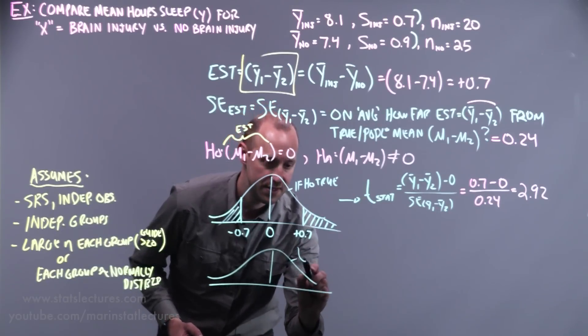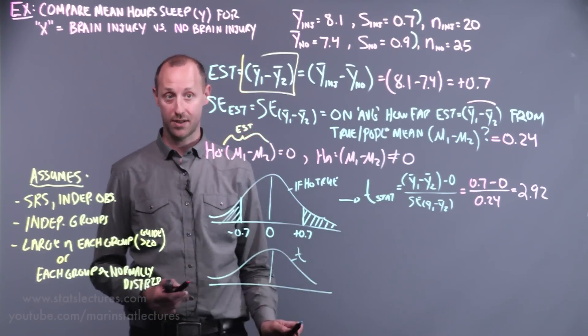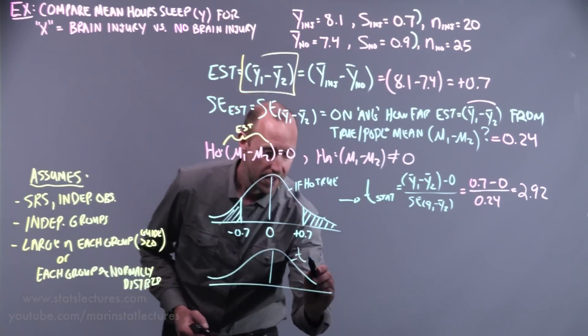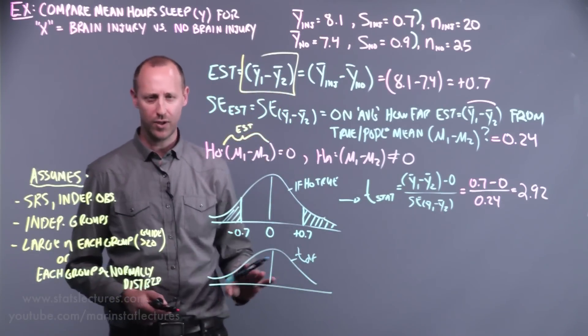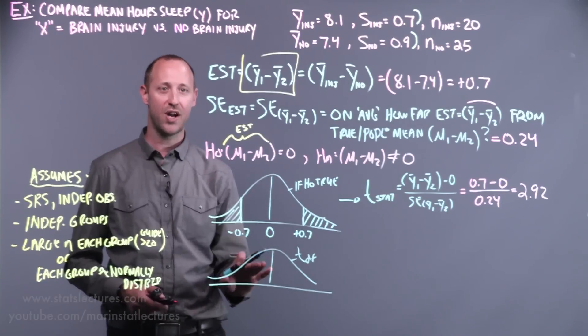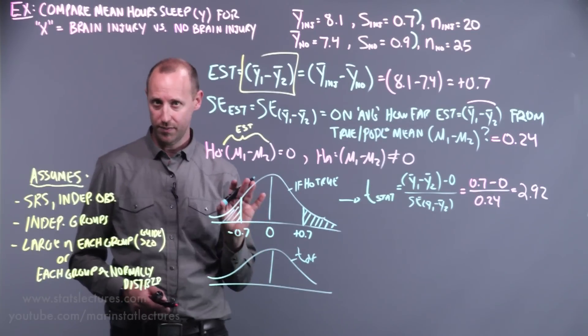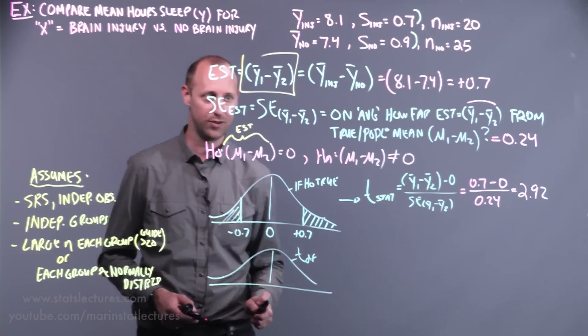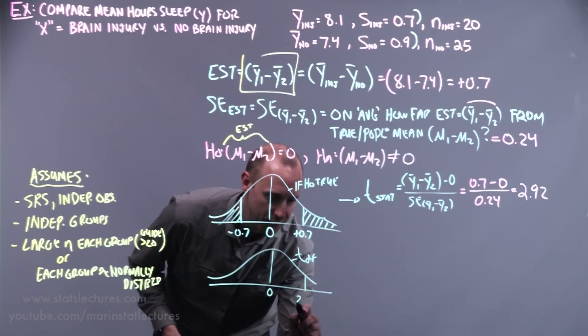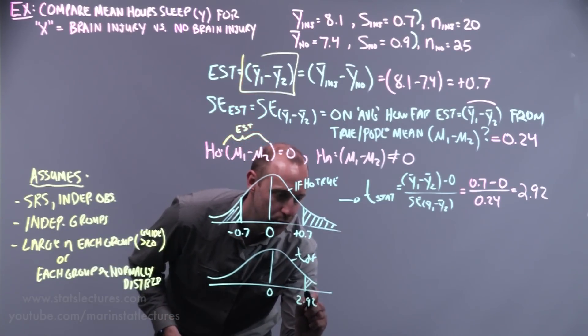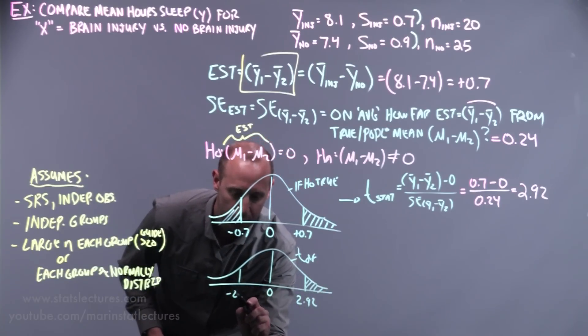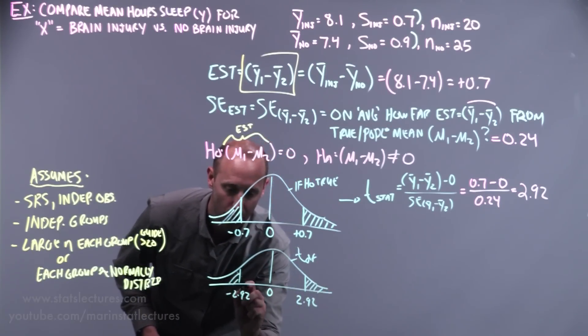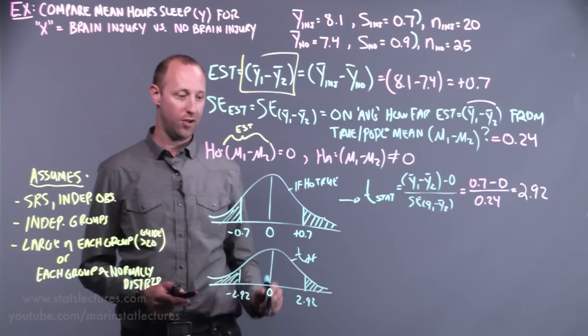This is on the standardized scale. It follows a t-distribution. It has some particular degrees of freedom. Let's put those aside for now. We'll get to that a little bit later, but we don't want to distract ourselves from important but technical details. How often will we get an estimate 2.92 standard errors above or 2.92 standard errors below what we expect if the null is true?